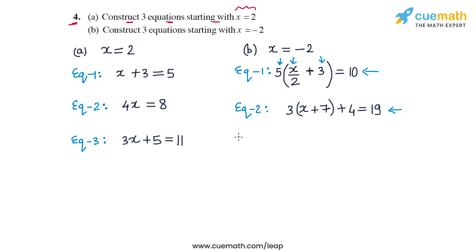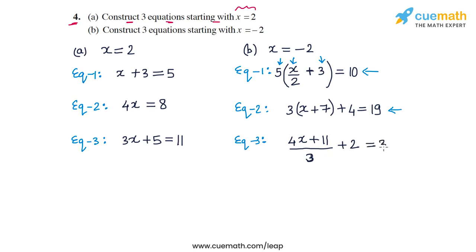For the third equation, multiply x by 4: 4x gives minus 8. Add 11 to get 3, then divide by 3 to get 1, and add 2 to get 3. So (4x + 11)/3 + 2 = 3 is satisfied by x = -2. Verifying: 4(-2) = -8, -8 + 11 = 3, 3/3 = 1, 1 + 2 = 3. Correct.